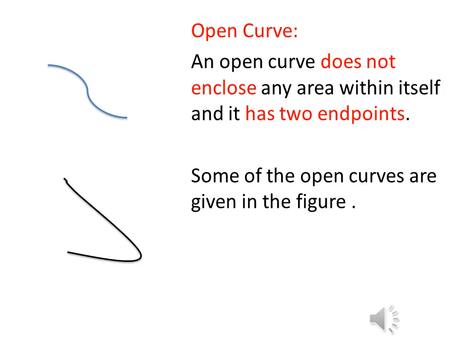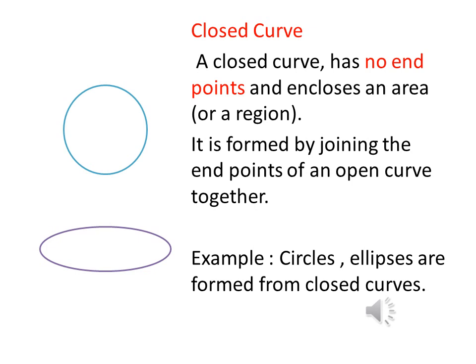Another type is a closed curve. A closed curve is one that encloses a particular region or area within itself. It has no particular endpoints — it is actually formed by joining the endpoints of an open curve together. For example, circles and ellipses are formed from closed curves. You cannot identify which point of a circle is the starting point and which is the final point, so there are no visible initial or final points.